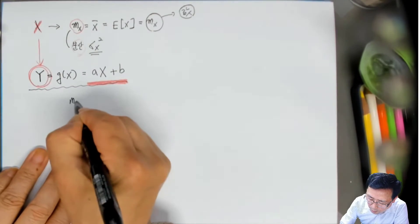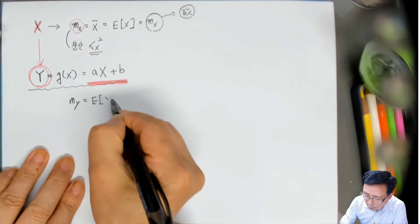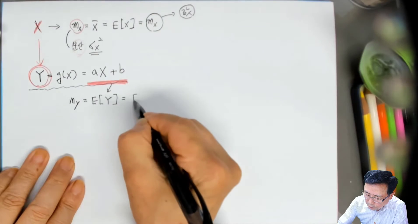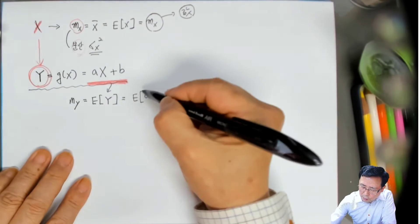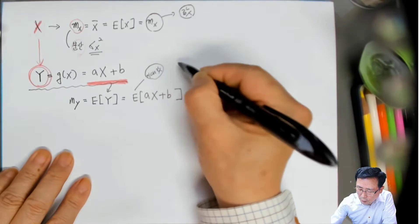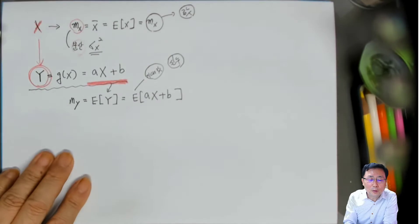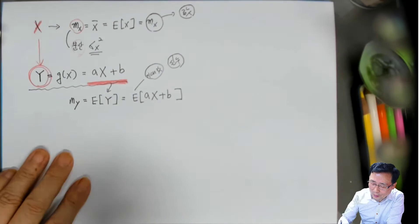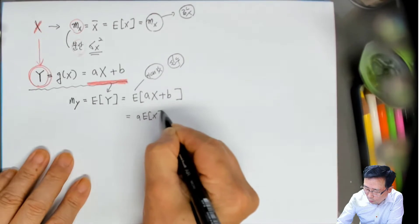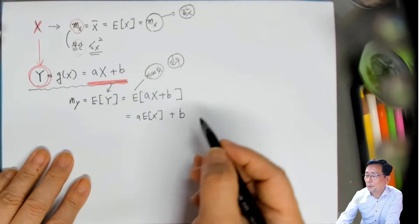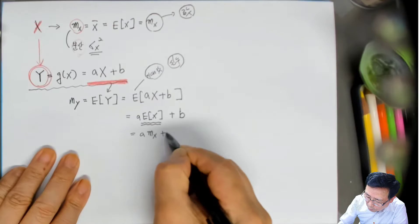이것의 평균을 구하면 my라고 쓸 수 있겠죠. 정의에 의해 E[y]가 될 것입니다. y가 ax + b니까 E[ax + b]가 됩니다. 기댓값은 확률변수에만 적용하는 것이지 실수 값에 적용할 수 없는 거죠. 3의 기댓값은 3이고, 5의 기댓값은 5입니다. a는 실수니까 앞으로 나오고 b도 그냥 값이니까 앞으로 나오면, x의 기댓값을 mx라고 했기 때문에 my = a·mx + b로 표시할 수 있습니다.